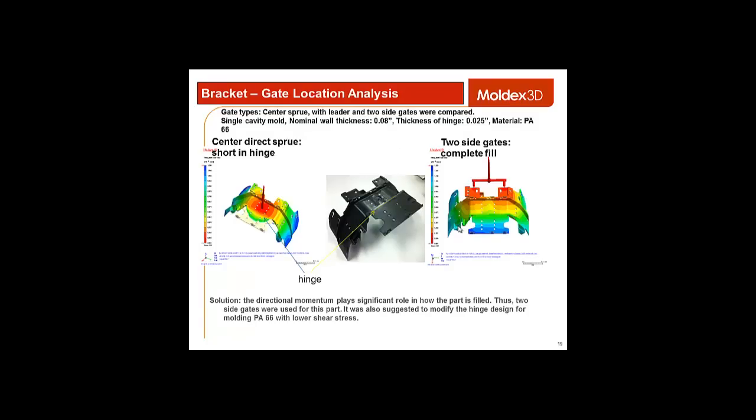First, if you look at the picture on the left, you can see one model with a hinge. It has only one gate. The nominal wall thickness is .08, and the thickness of the hinge is .025. Now, because the hinge was so thin, it was hard to fill, and it caused a short shot. The picture on the right side is the same model with two gates. By adding a gate, we were able to solve the short shot problem.